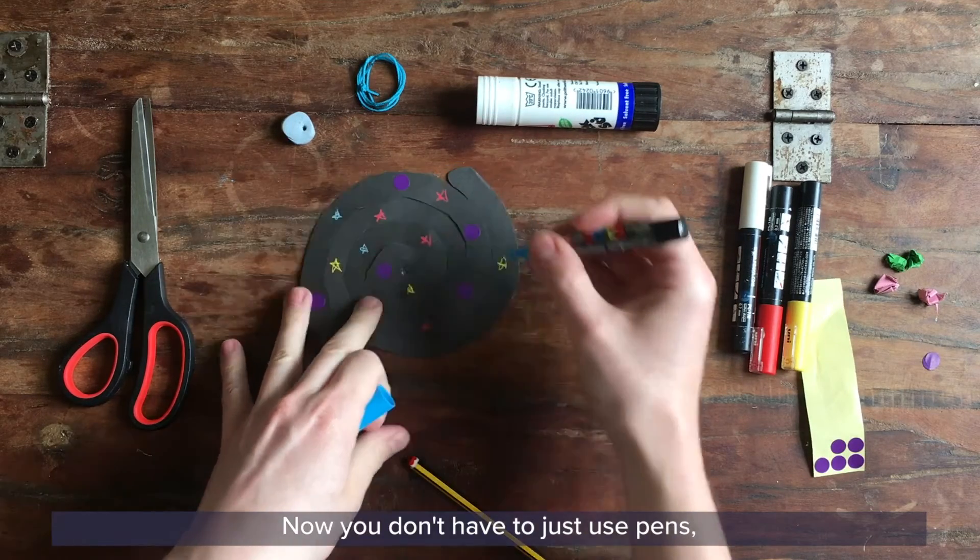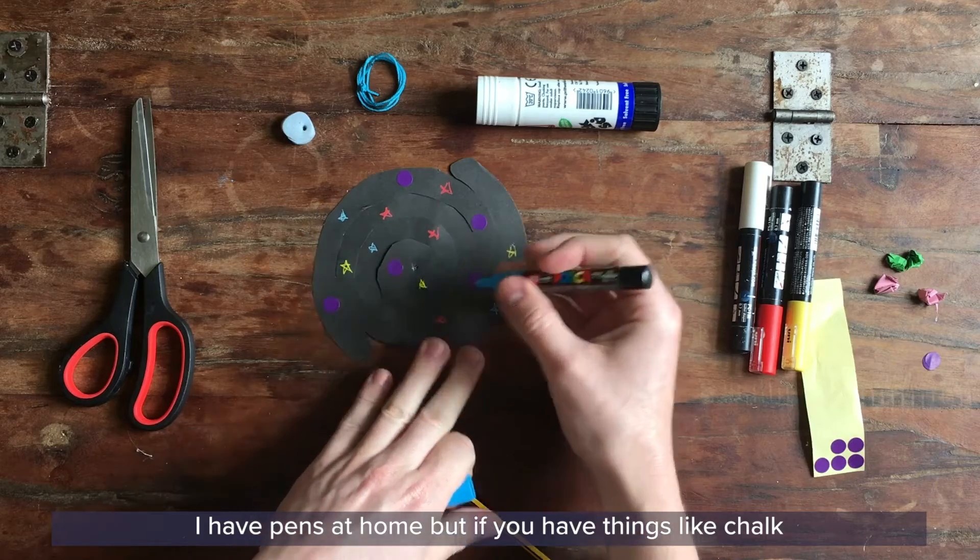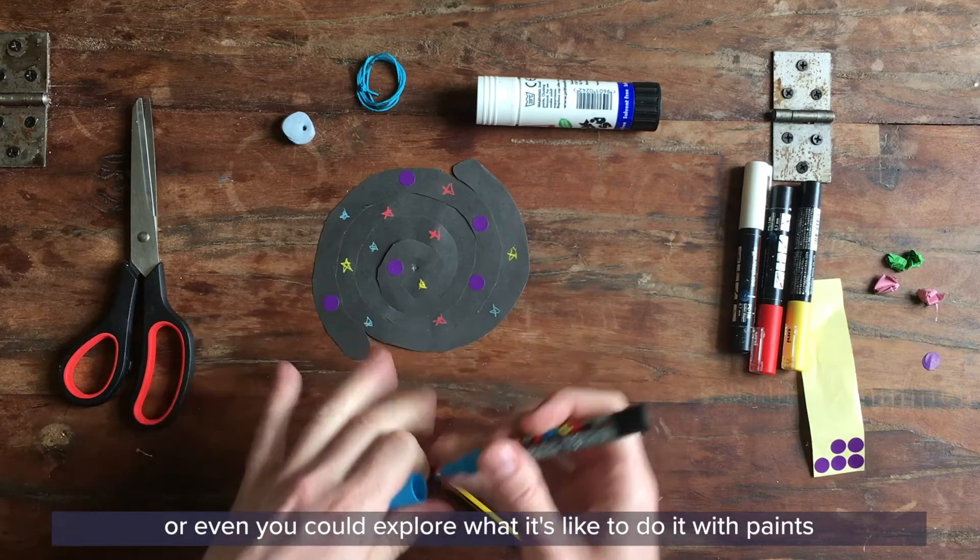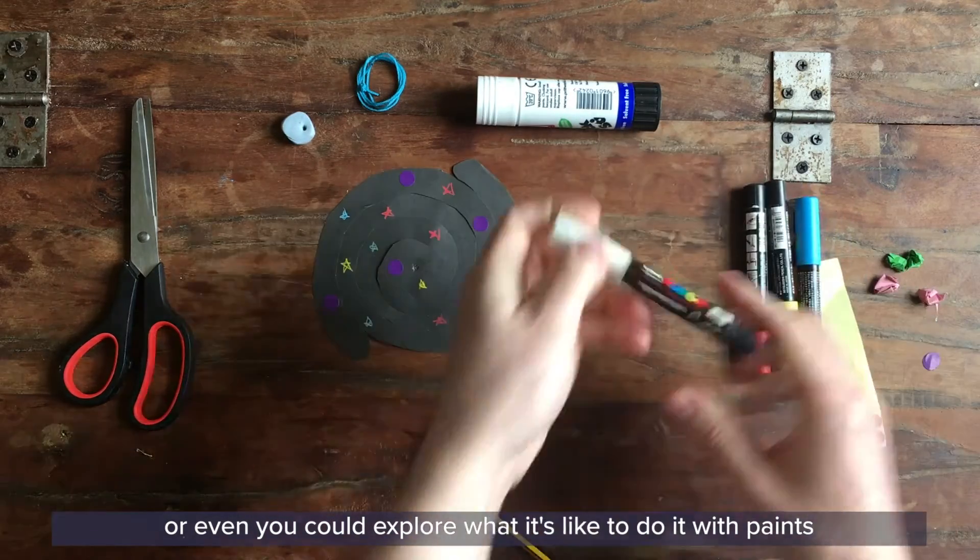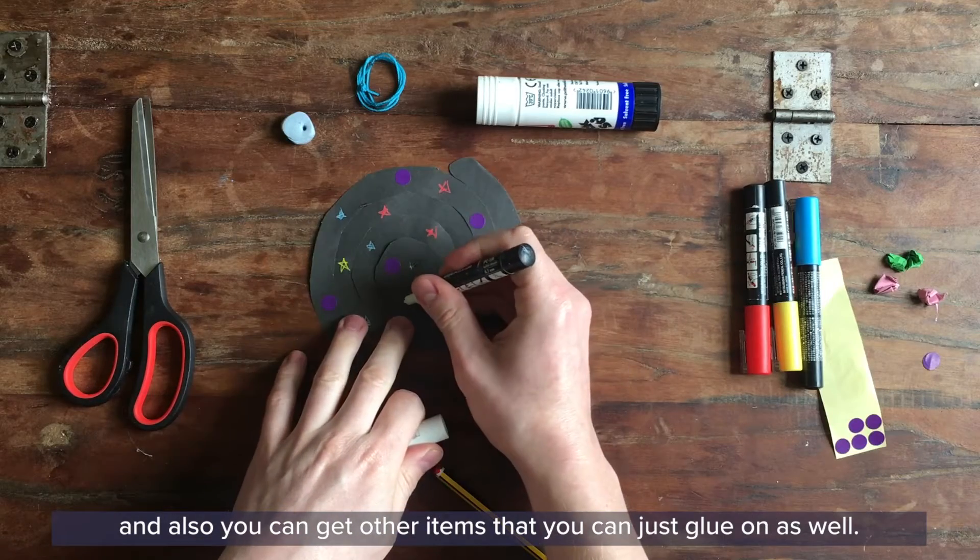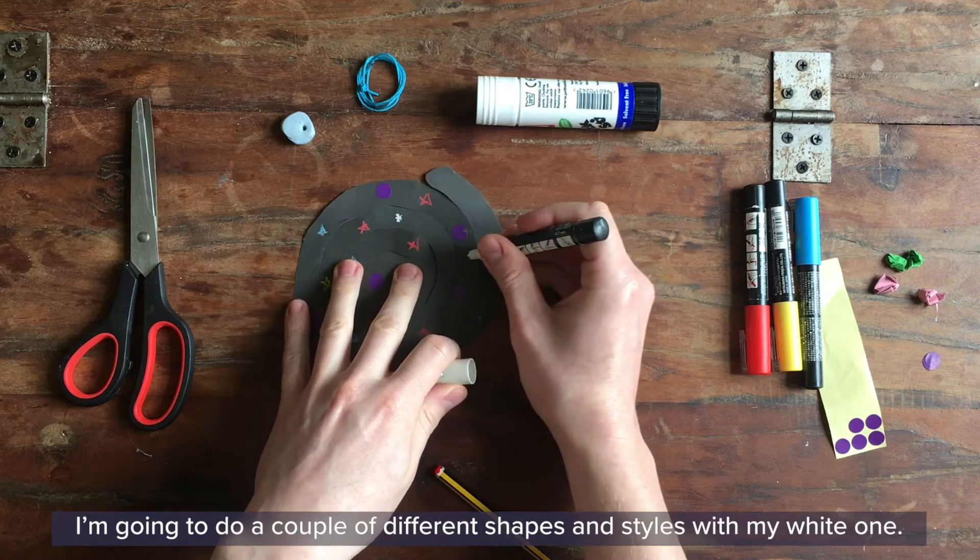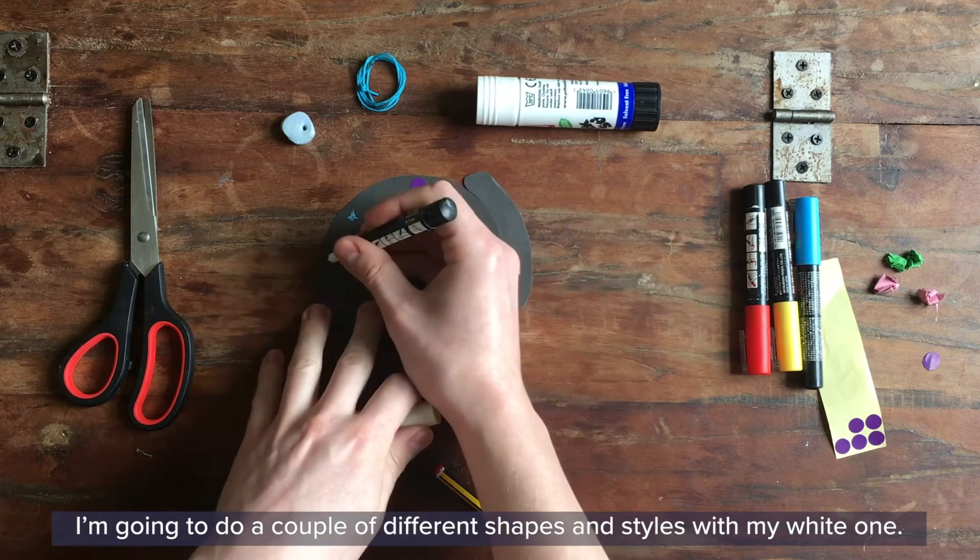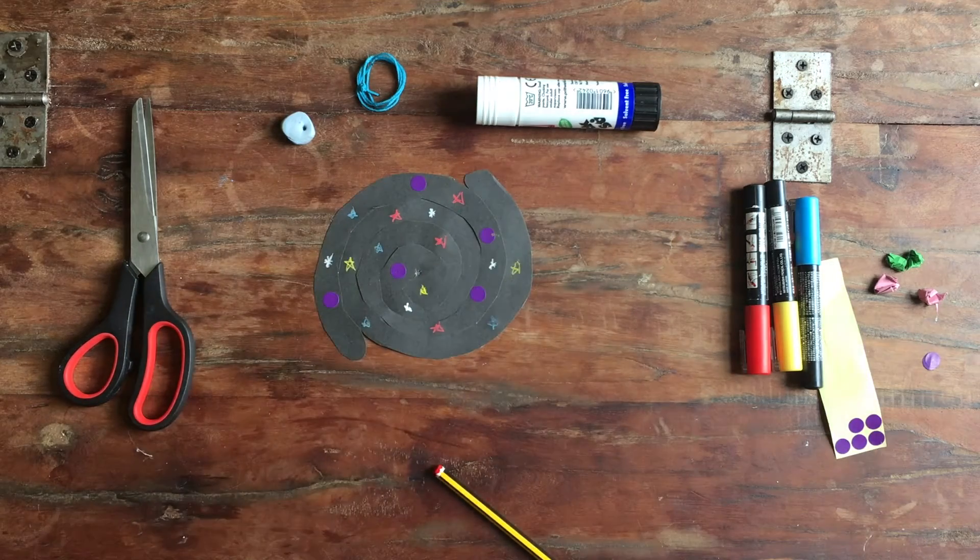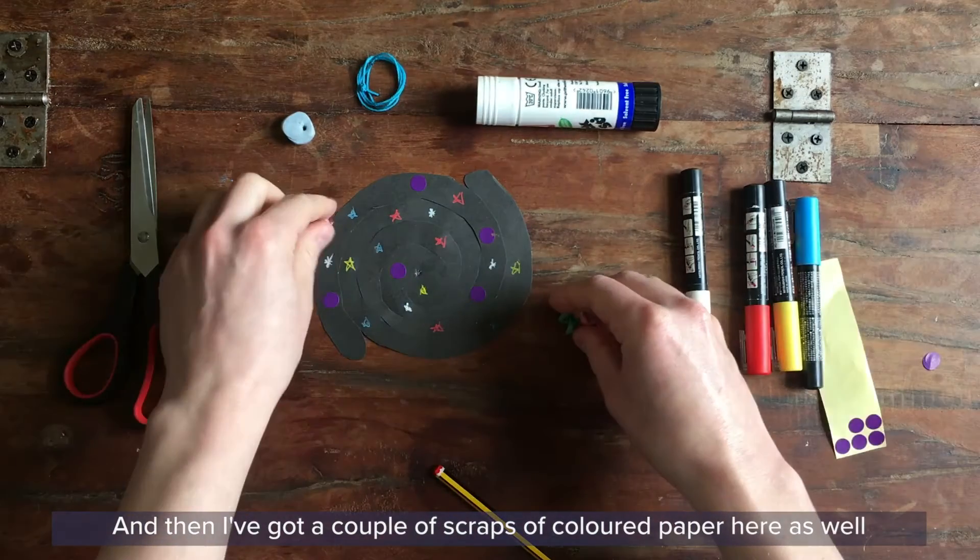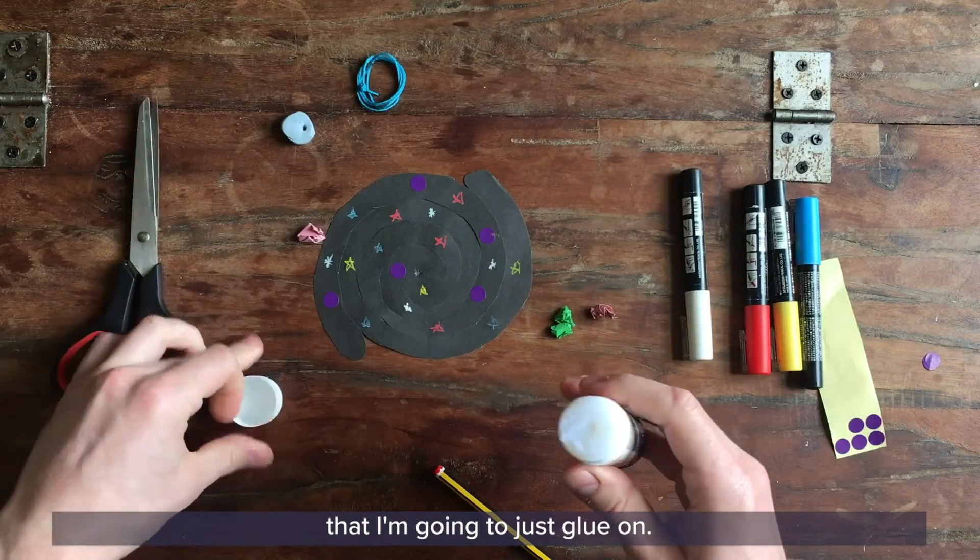Now you don't have to just use pens. I have pens at home. But if you have things like chalk or even you could explore what it's like to do it with paints. And also you can get other items that you can just glue on as well. I'm going to do a couple of different shapes. This starts with my white one. And then I've got a couple of scraps of colored paper here as well that I'm going to just glue on.